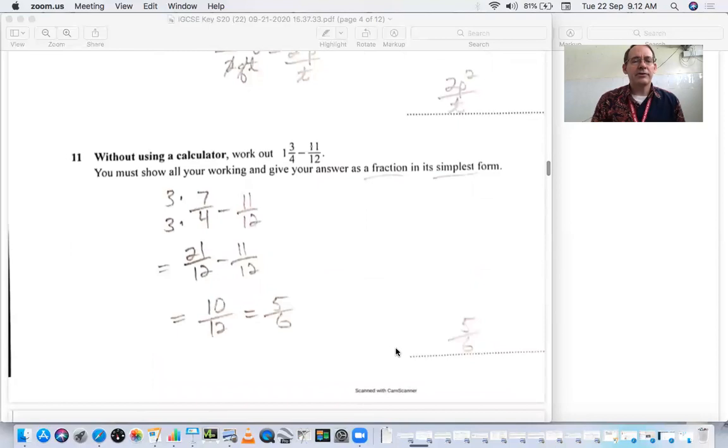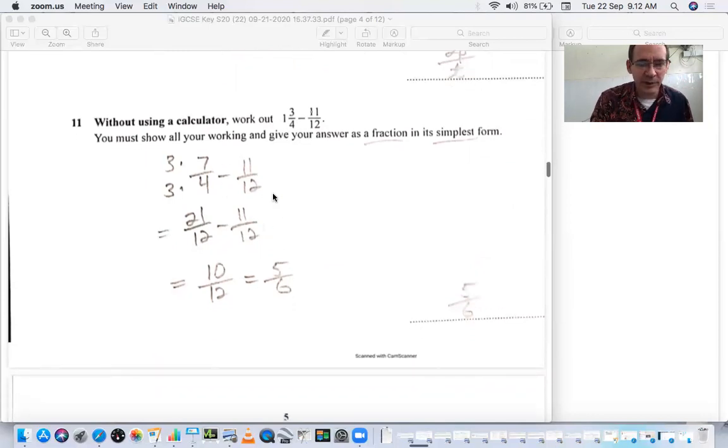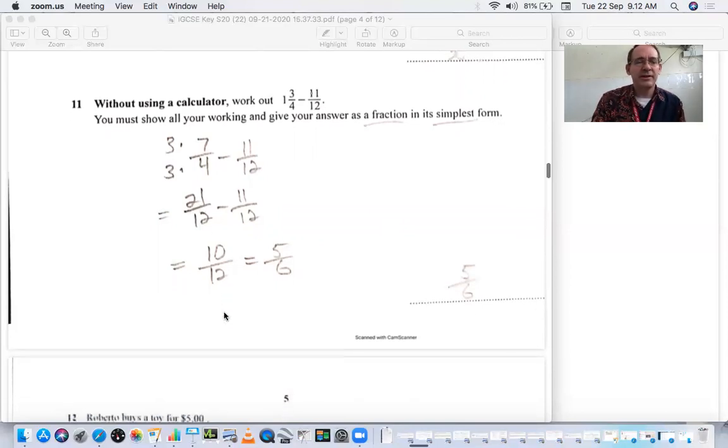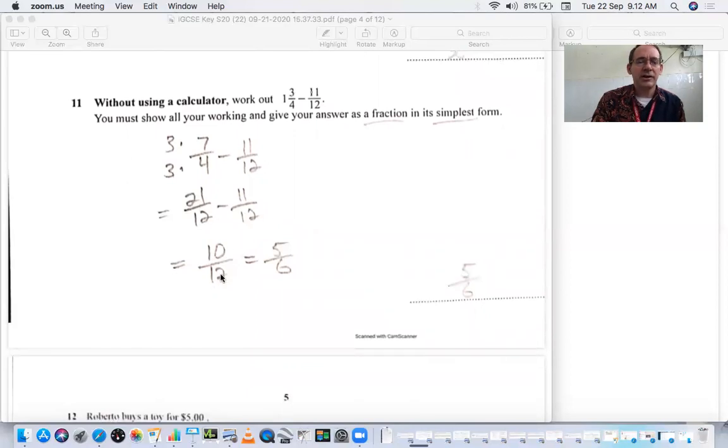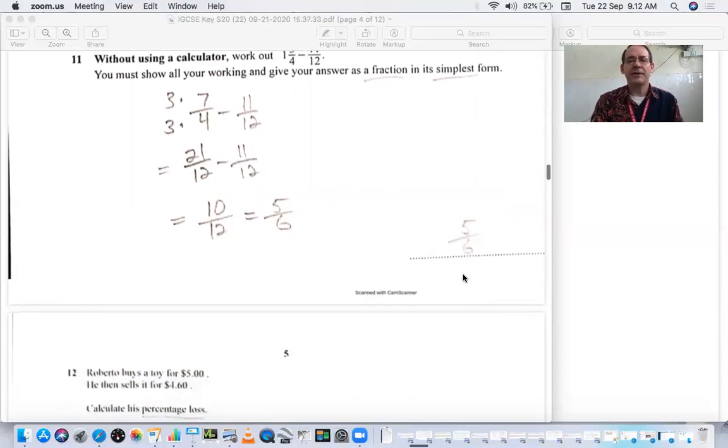Number 11, without using a calculator, work out these fractions. Here you have a mixed number. 1 times 4 is 4 plus 3 is 7 fourths minus 11 twelfths. We want a common denominator. Multiply top and bottom by 3 gives you 21 twelfths. 21 minus 11 is 10 over the 12. And 10 twelfths reduces to 5 sixths. Notice it says to simplify.